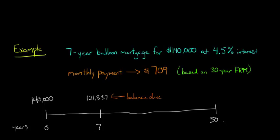That entire balance becomes due. And you might say, hey, wait a minute, how could somebody possibly just all of a sudden have $121,000? This is just ridiculous. Why would this kind of loan appeal to anybody?